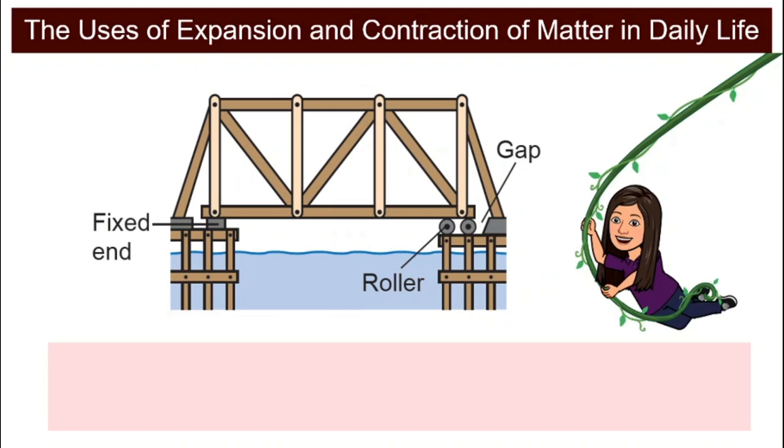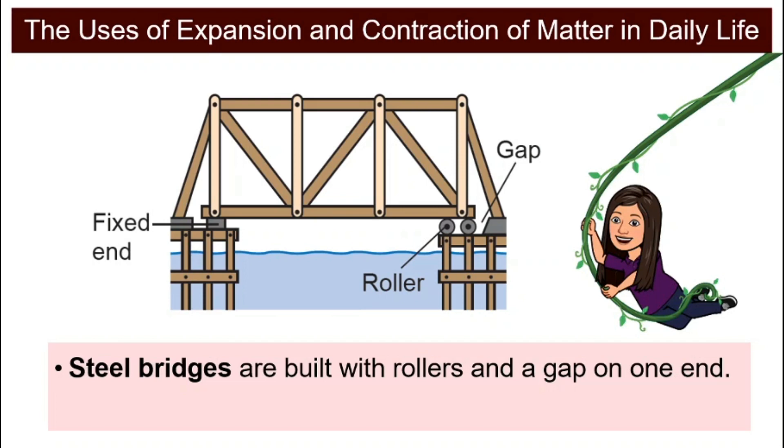The same goes for steel bridges. Steel bridges are normally built with rollers and also a gap on one end. It is for the same reason so that there is room for the bridges to expand during hot weather. If there's no gap or no roller, during hot weather, as the steel bridges start to expand, it might bend upward or downward and that can be very dangerous.